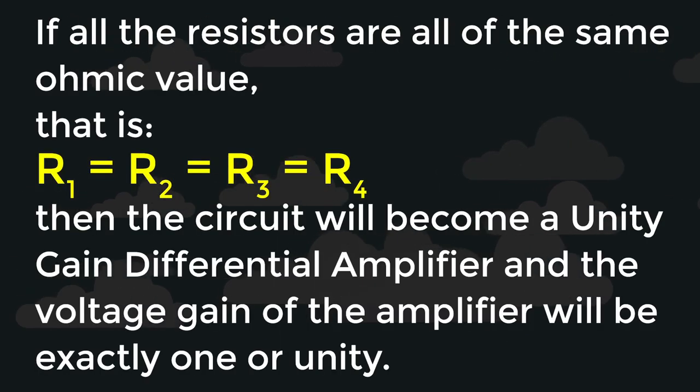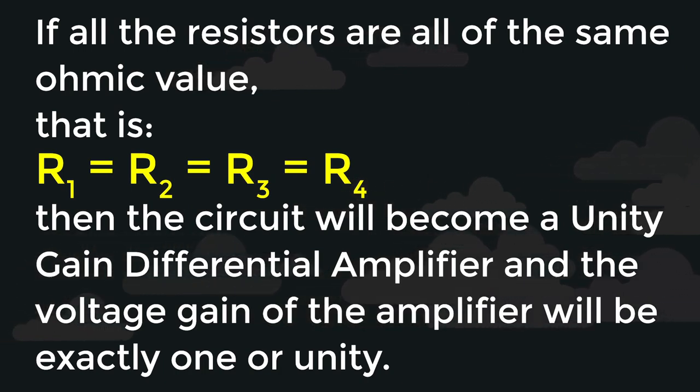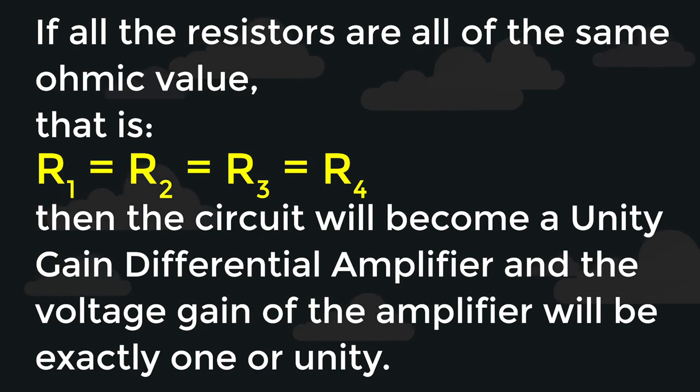If all the resistors are all of the same ohmic value, that is R1 equals R2 equals R3 equals R4, then the circuit will become a unity gain differential amplifier and the voltage gain of the amplifier will be exactly 1 or unity.